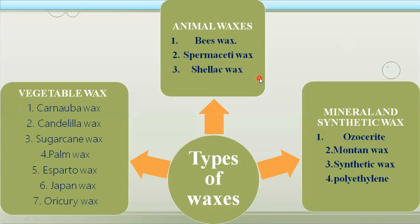Now we will see the different types of waxes. They are classified into animal waxes, vegetable waxes, and mineral or synthetic waxes. In the animal waxes category, there are beeswax, spermaceti wax, and shellac wax — these are obtained from particular animals. Beeswax is obtained from the honey bee, and shellac wax is obtained from the female shellac bug.